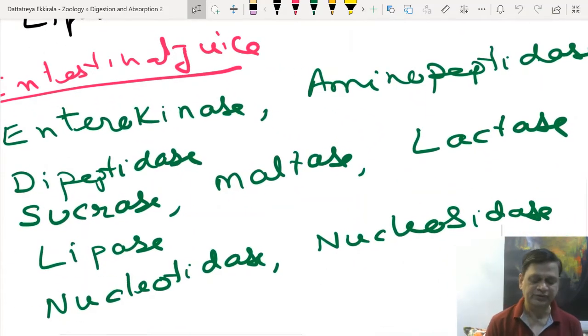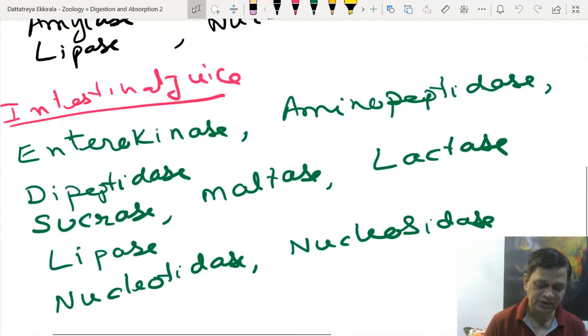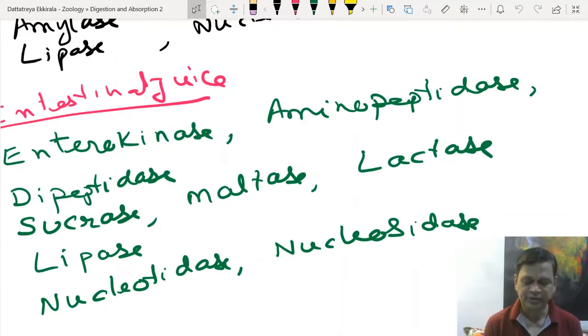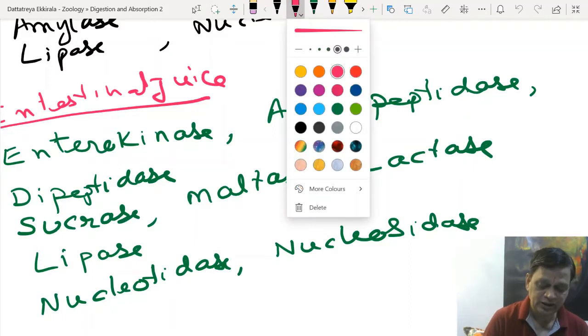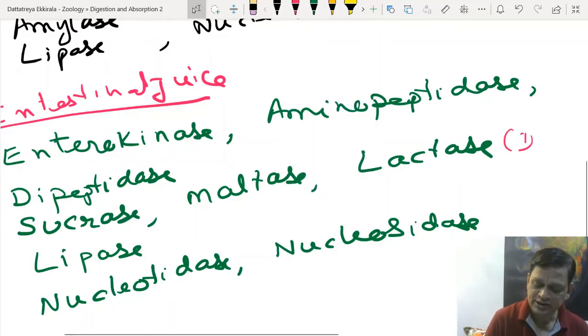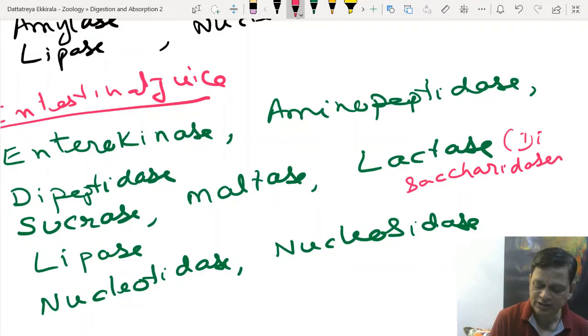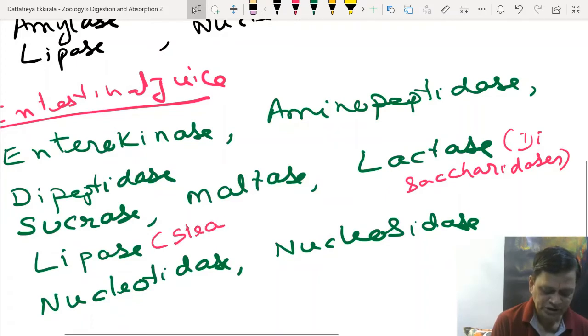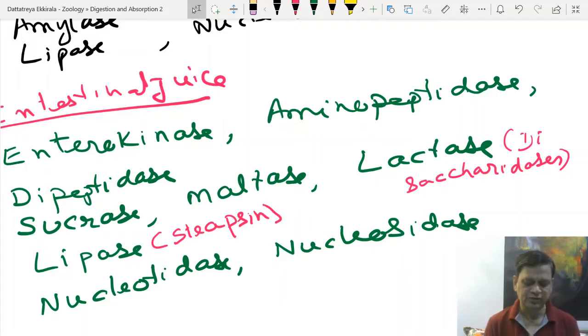Intestinal juice contains enterokinase, which activates trypsinogen to trypsin. Aminopeptidase acts on terminal peptide bonds with free amino groups. Dipeptidase digests dipeptides to convert into amino acids. Then sucrase, maltase, and lactase. All these three can collectively be called disaccharidases. Pancreatic lipase can also be called steapsin.